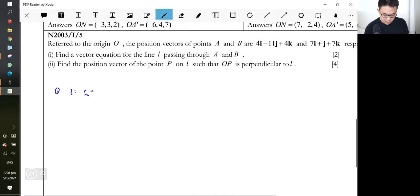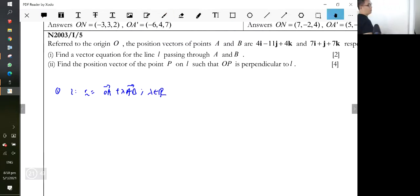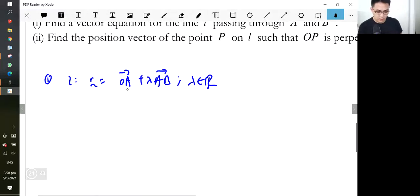The line equation: r = OA + λ(AB), where λ is a real value. It doesn't matter - you can use OA or OB, it's fine. Refer to page 13, same thing.